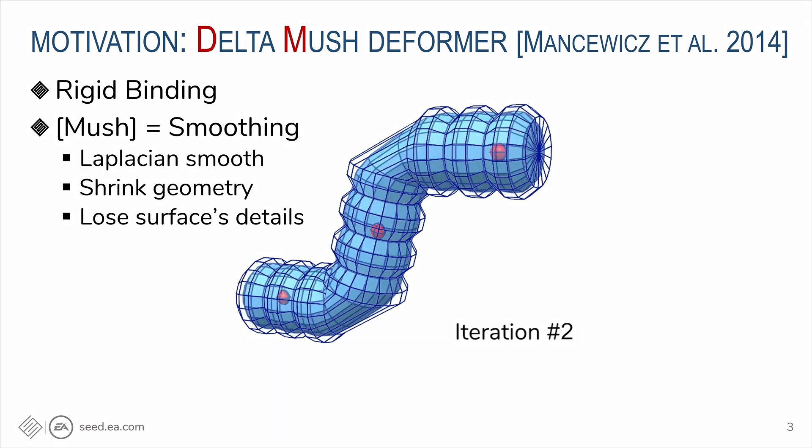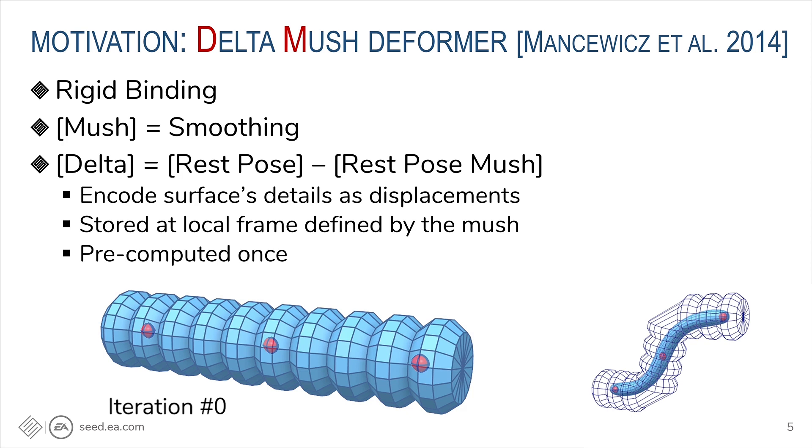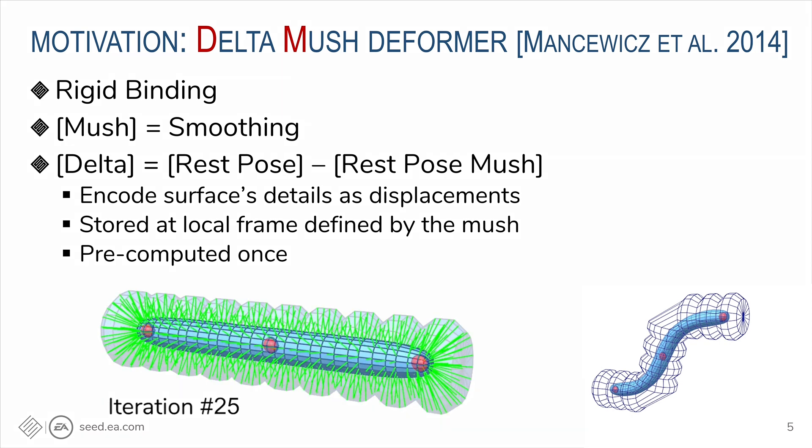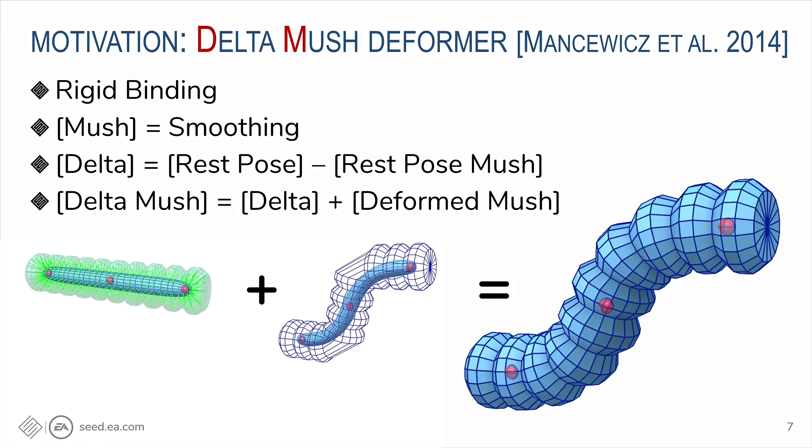To fix this, Delta Mush uses Laplacian smoothing, or mushing as named by the original authors. Smoothing fixes broken geometry, but it shrinks the mesh and blurs all details. To recover the details, we compute Delta. It's the difference in the rest pose between the original geometry and the smooth version stored in the local coordinate frame. Those are green lines in this figure. Note that we only need to compute Delta once per model, but not at runtime. When we add Delta on top of the mush using the local coordinate frame of the deformed mush, we have the result with smooth deformation and sharp geometry details. The great thing about Delta Mush is it produces good quality deformation with very simple concept and setup.